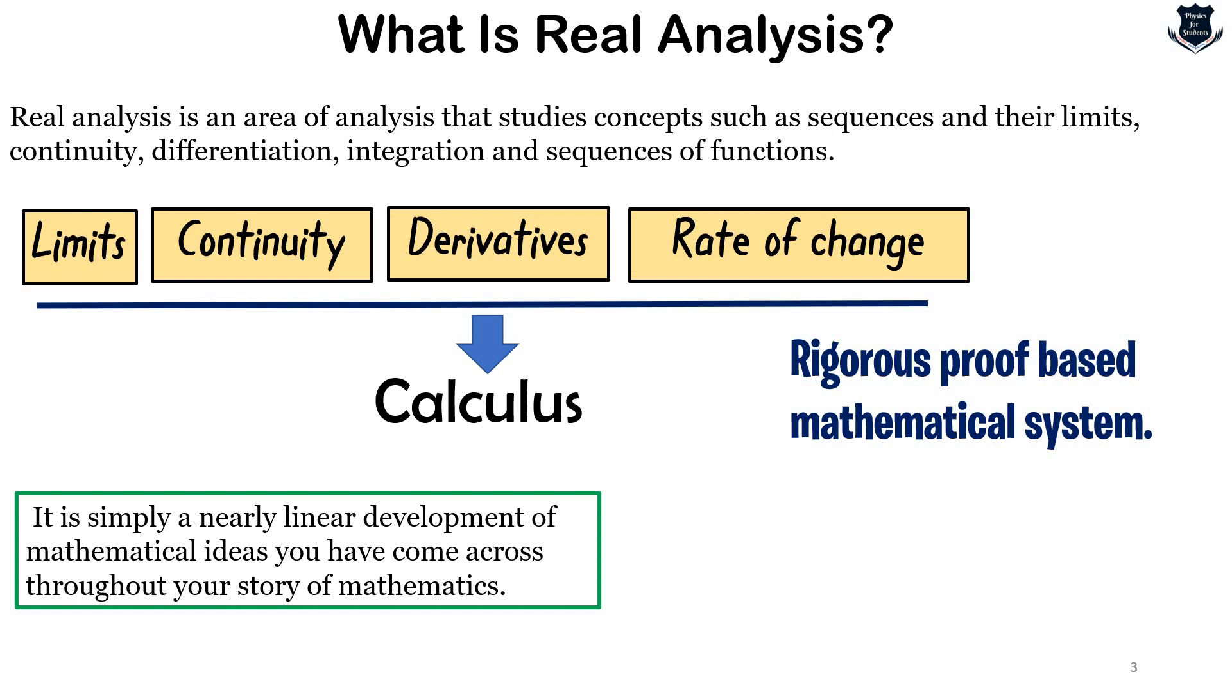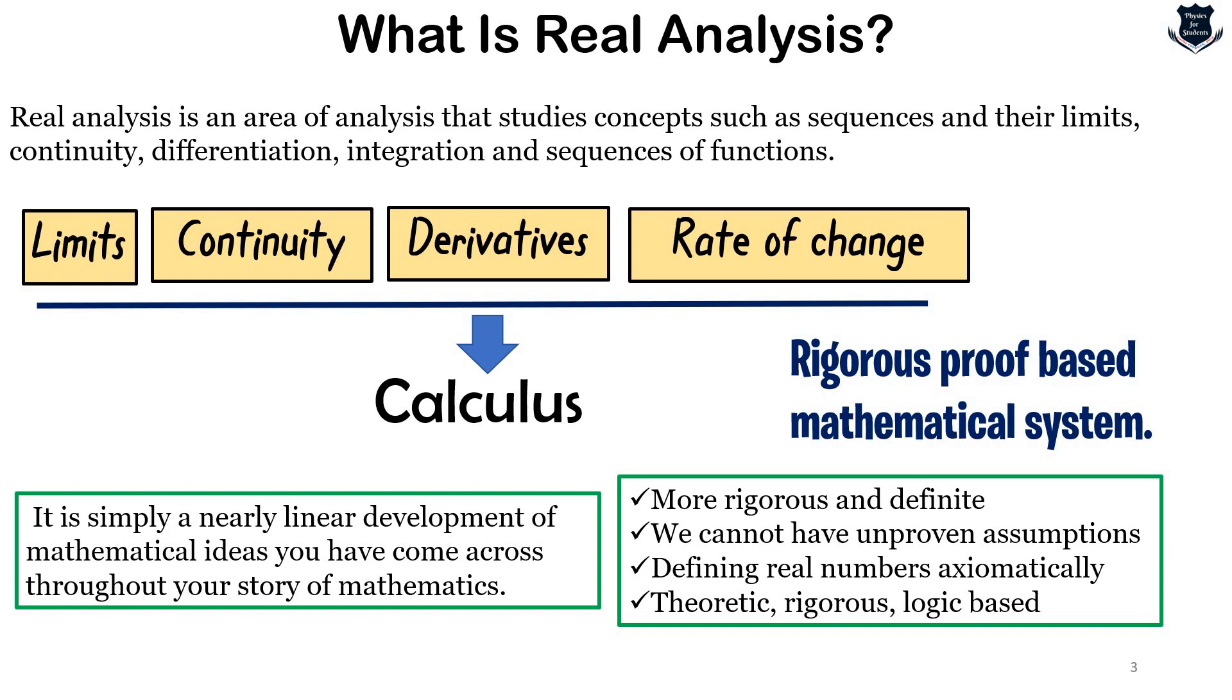So let us remember this is a rigorous proof based mathematical system. That means it would be more rigorous and definite. We do not have any unproven assumptions. Say for example, let something equal to something - no, we have to prove that what we are assuming. It is defining real numbers axiomatically. We will soon see what do we mean by real axioms, real number axiomatically. That means we need to prove each and every state and remember that it is going to be theoretically rigorous and a logic based mathematical system.